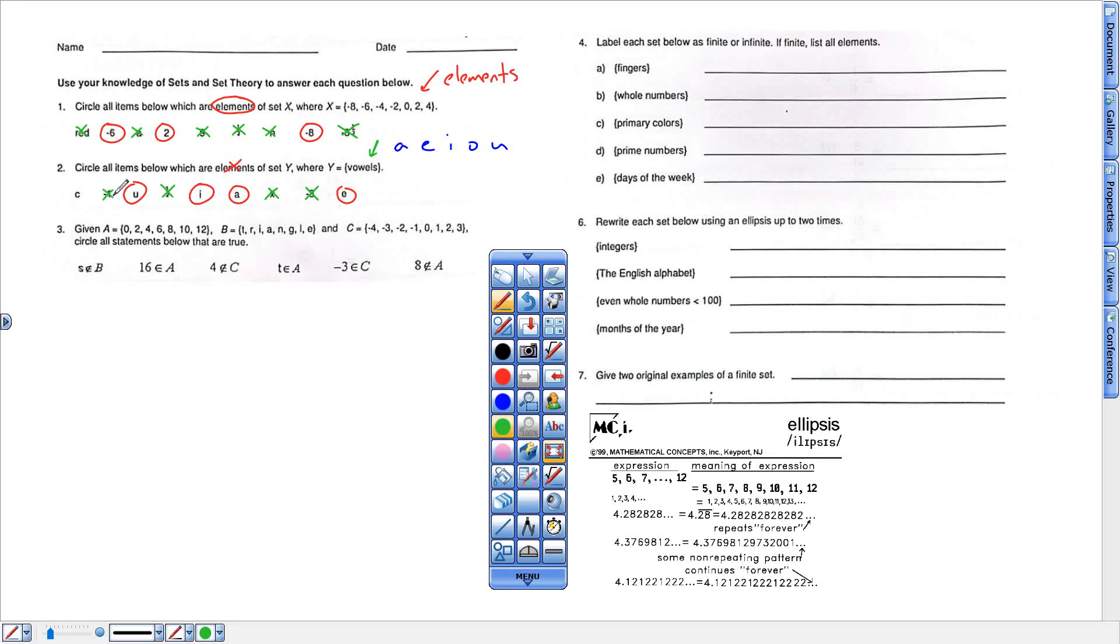All right, here we go. They give you three sets A, B, and C, and they want to know which of these are true. So this is saying S is not an element of B. That's what that's showing right there. That little slash through is saying S is not part of B. So I look at set B, and I look in there, and I see if S is in there. S is not in there. So S is not an element of B. That one's good.